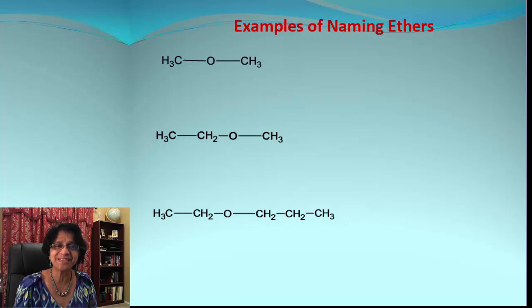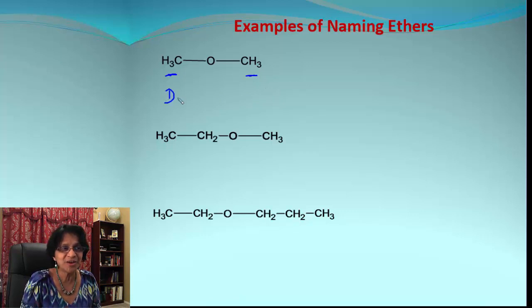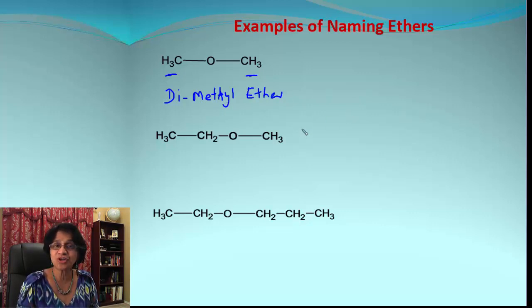Let's take some examples and see how it works. We will find out by both methods how to name the ethers. Look at the first example. Here we got both sides methyl groups, and if we have two same groups, we use the prefix 'di-'. The group here is methyl group, so we put dimethyl and we follow that by the name ether. That's the most common method.